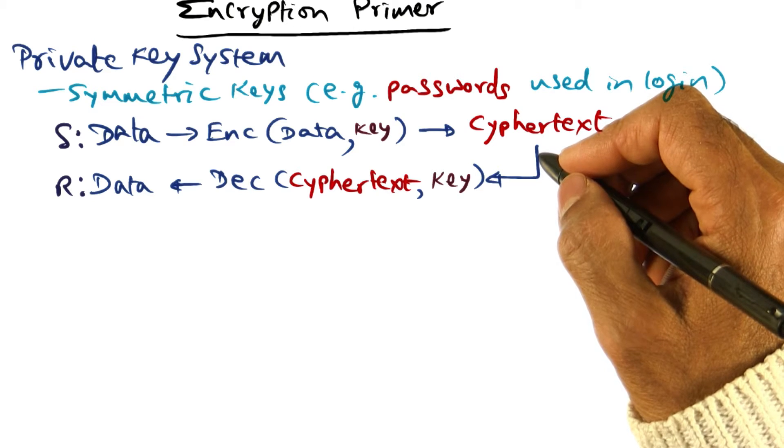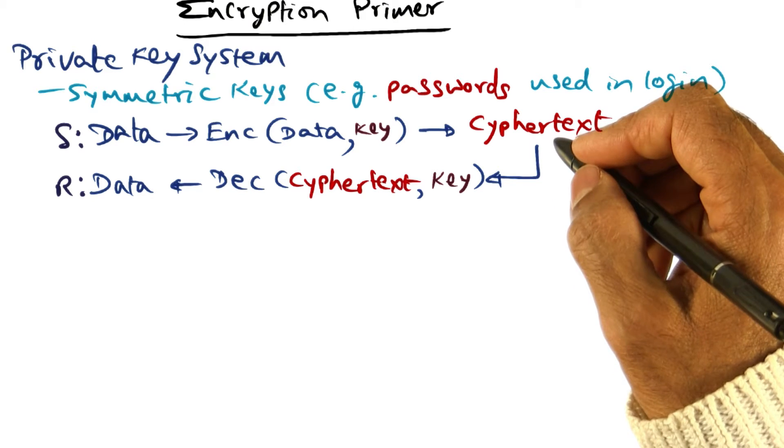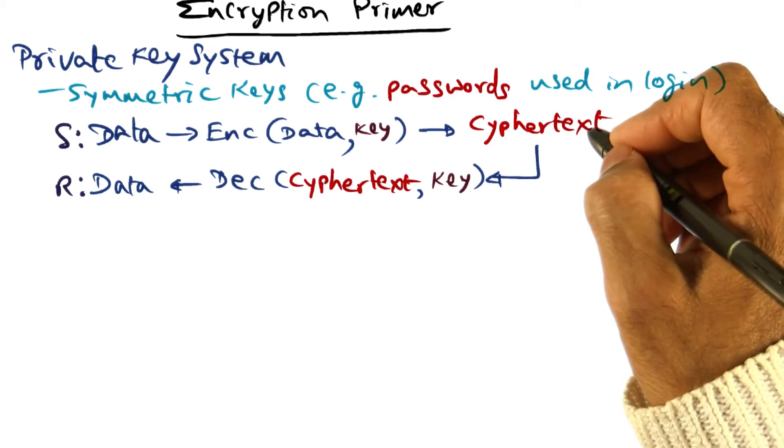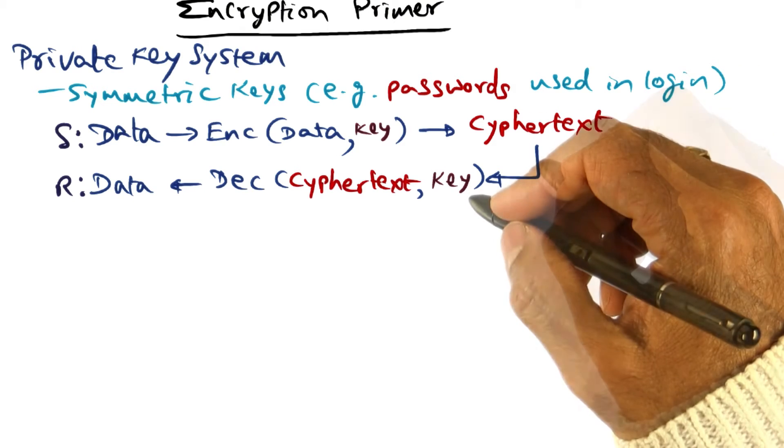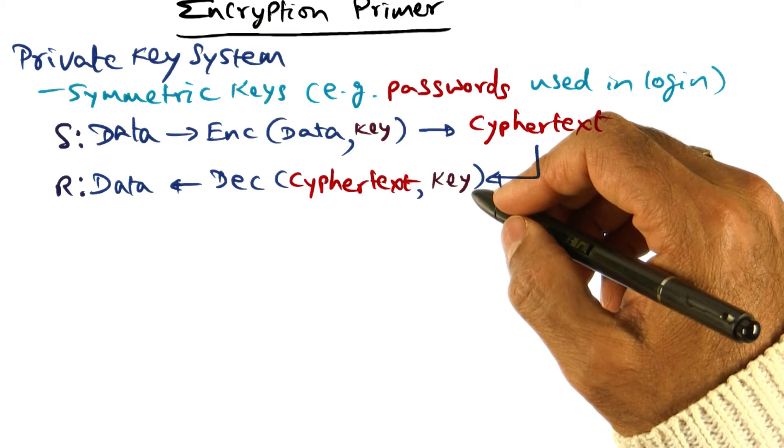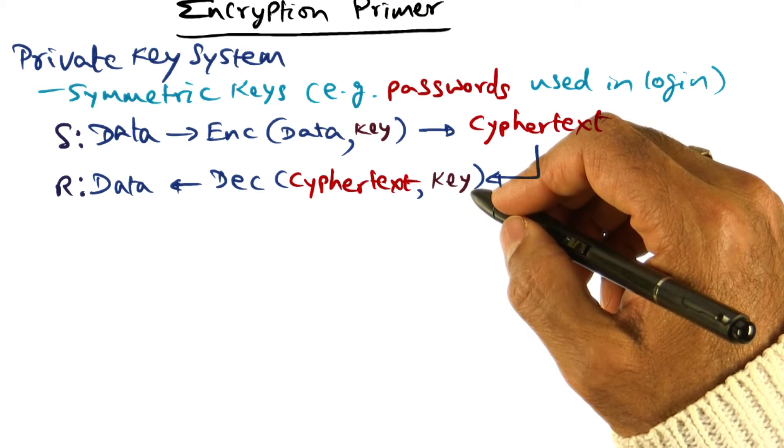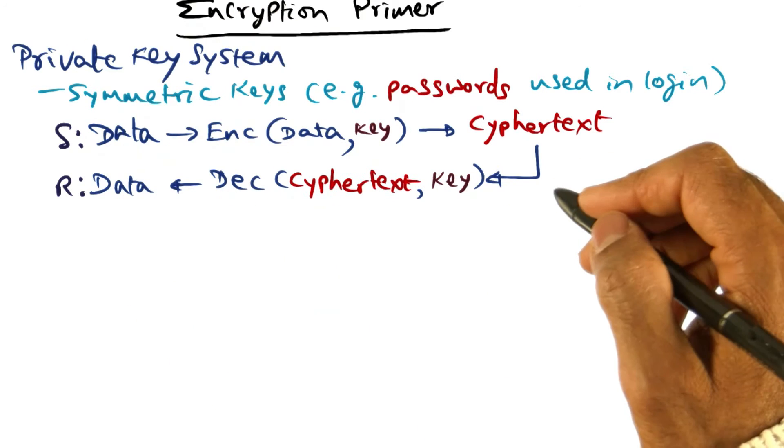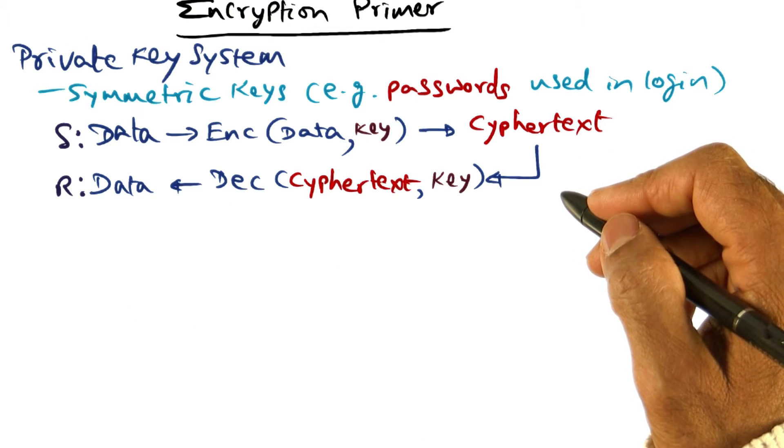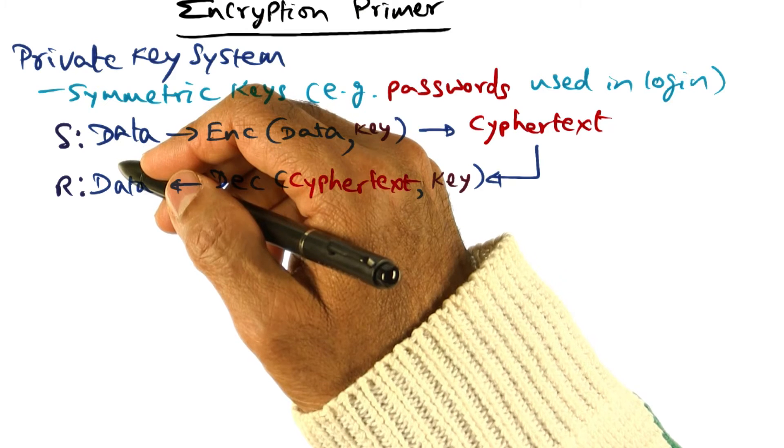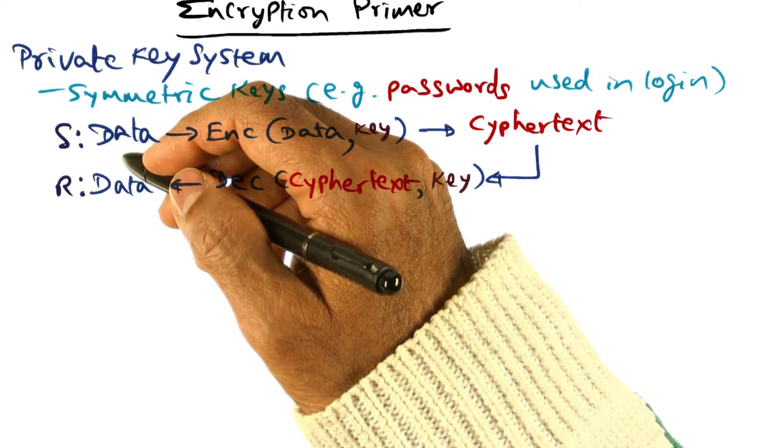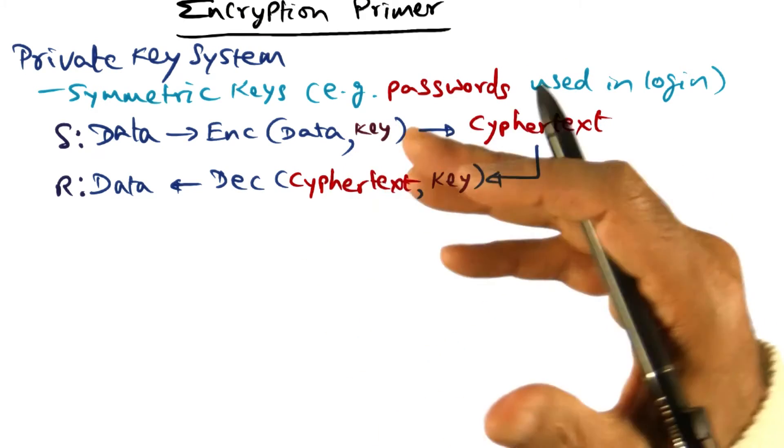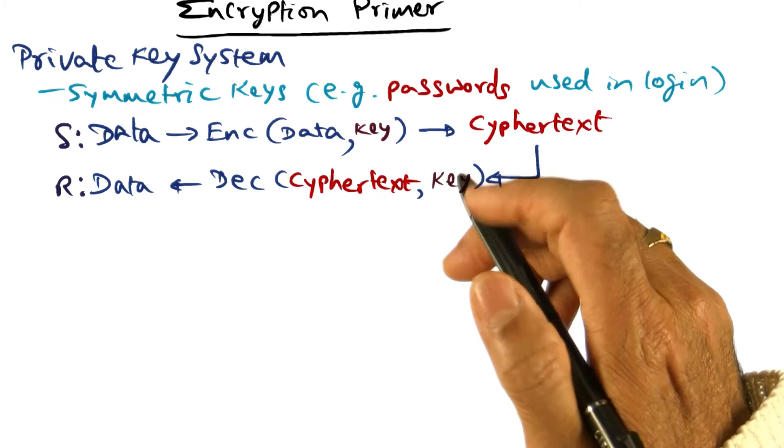But for any bad guy to access information that is flowing on the wire, they have to have the key in order to make sense out of the data that is flowing. And you make breaking the key hard enough computationally that the system is secure. Now one of the problems with the private key system is that the keys have to be distributed to the sender and the receiver. Key distribution is one of the difficulties with private key cryptosystems, especially as the size of the organization becomes larger and larger.